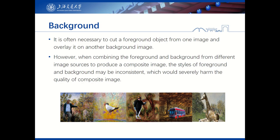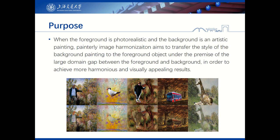It is often necessary to cut a foreground object from one image and overlay it on another background image. However, when combining foreground and background from different image sources to produce a composite image, the styles of foreground and background may be inconsistent, which would severely harm the quality of a composite image. When the foreground is photo-realistic and the background is an artistic painting, Painterly Image Harmonization aims to transform the style of the background painting to the foreground object under the premise of a large domain gap between the foreground and the background, in order to achieve more harmonious and visually appealing results.